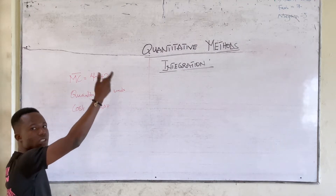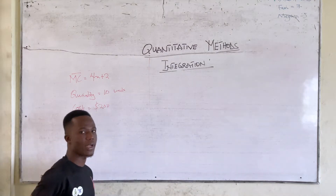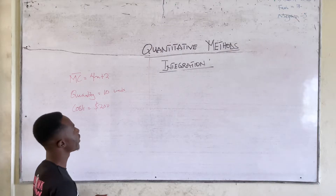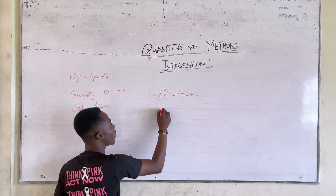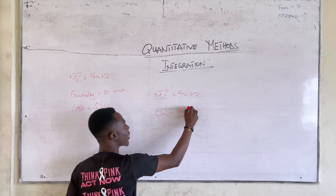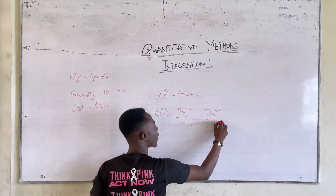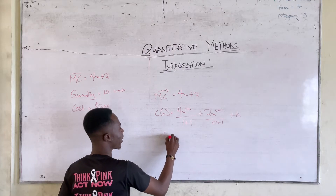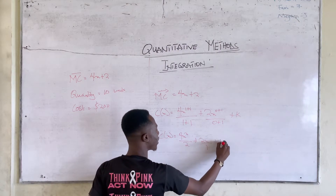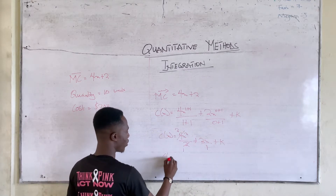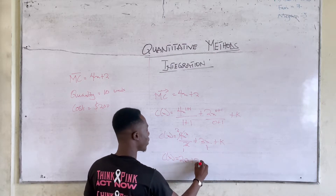There is the marginal cost, so you have to integrate it to get the total cost. We have been given the cost and the unit, so we substitute those two into the formula to get the total cost function. So, MC = 4X + 2. Our C(X) would be 4X to the power 1+1 divided by 1+1, plus 2X to the power 0+1 over 0+1, plus K. So C(X) = 4X² / 2 + 2X + K, which simplifies to C(X) = 2X² + 2X + K.